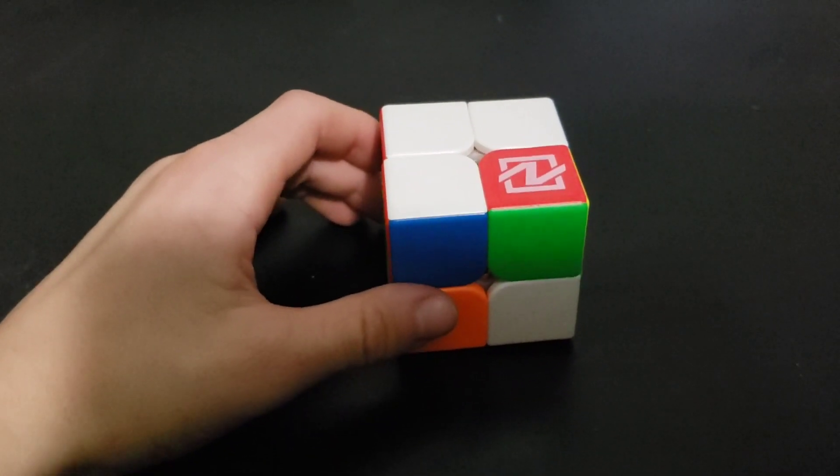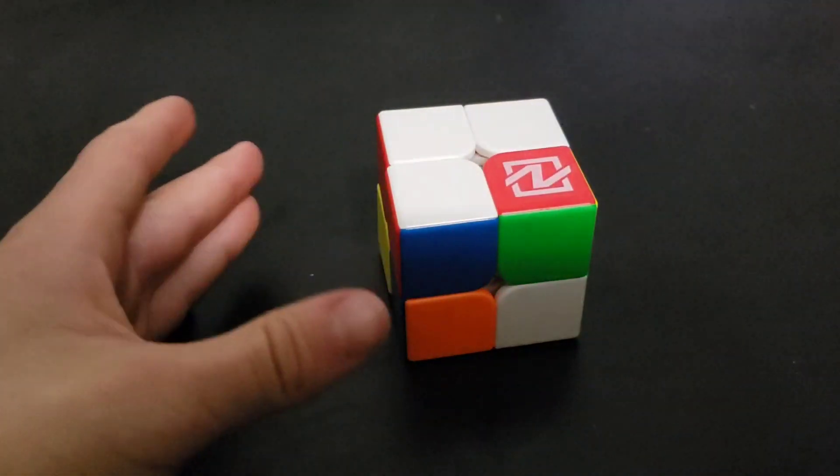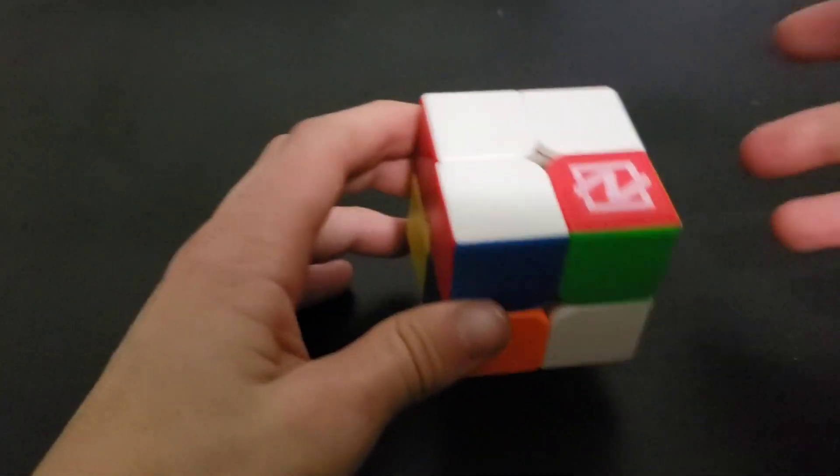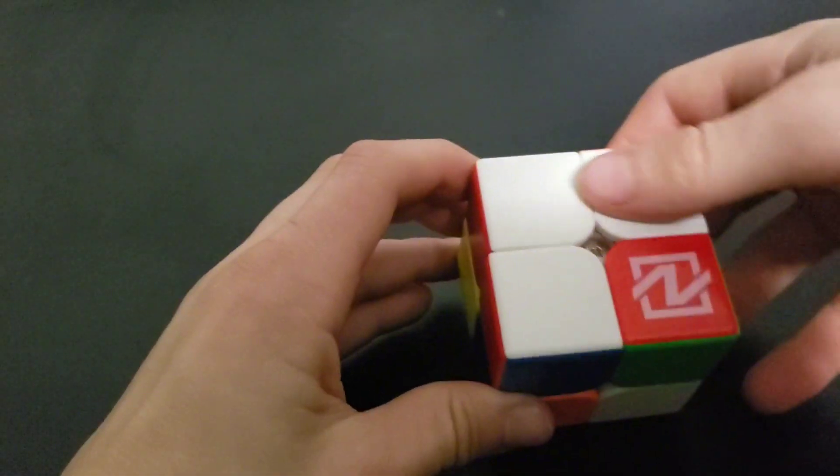How to solve a Rubik's Cube 2x2. So first what you're going to want to do is you're going to want to get three whites.